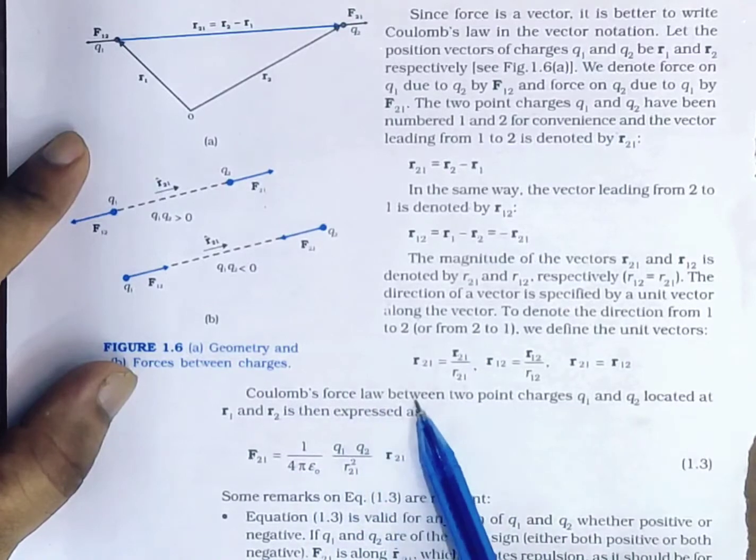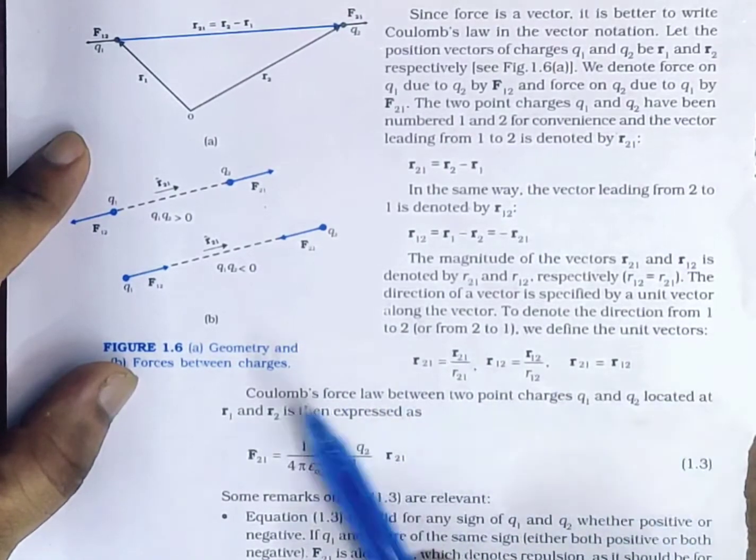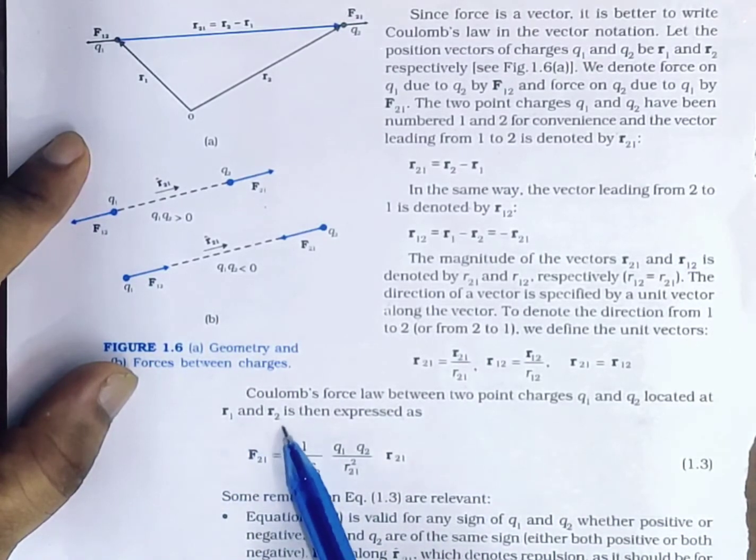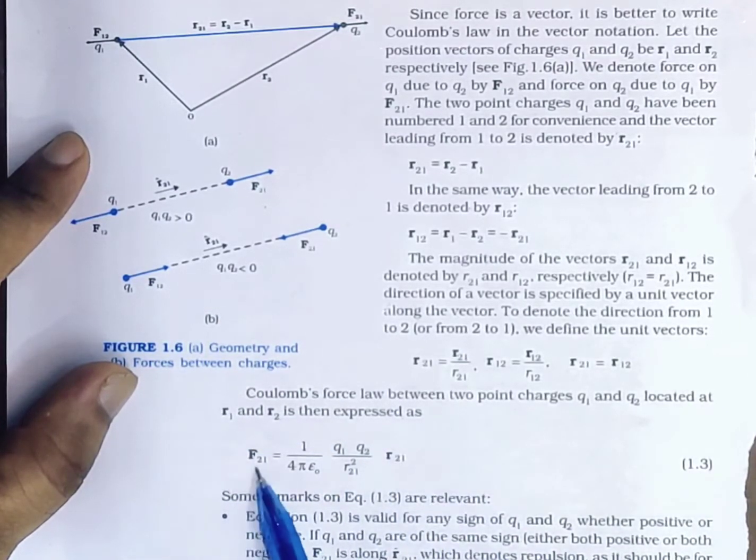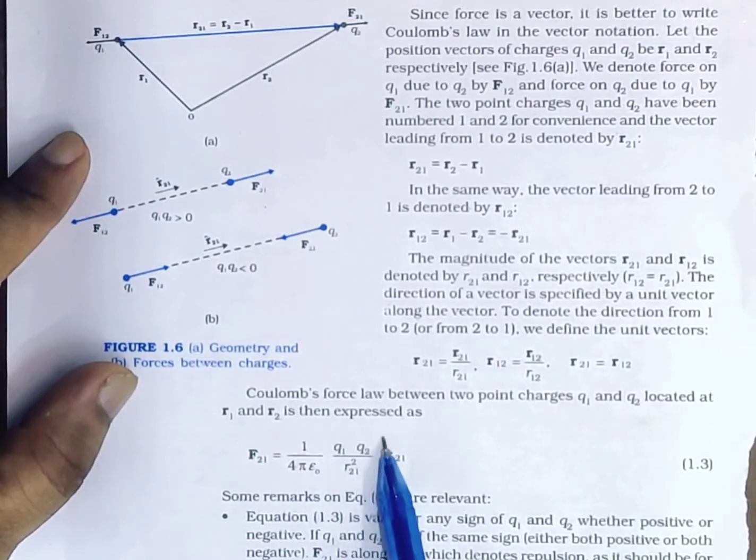Coulomb's force law between two point charges Q1 and Q2 located at vector positions R1 and R2 is then expressed as F21 equals 1 over 4πε₀ times Q1Q2 divided by r21 squared times unit vector r̂21.